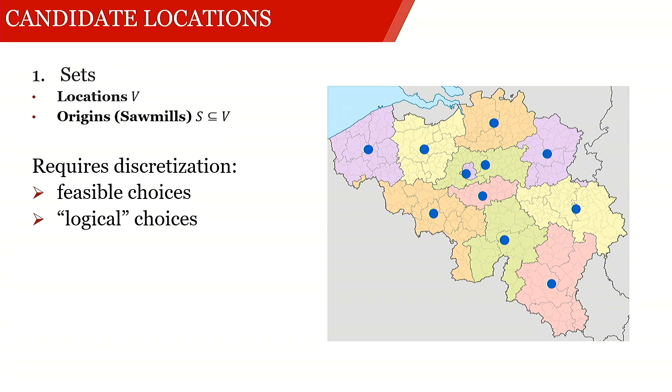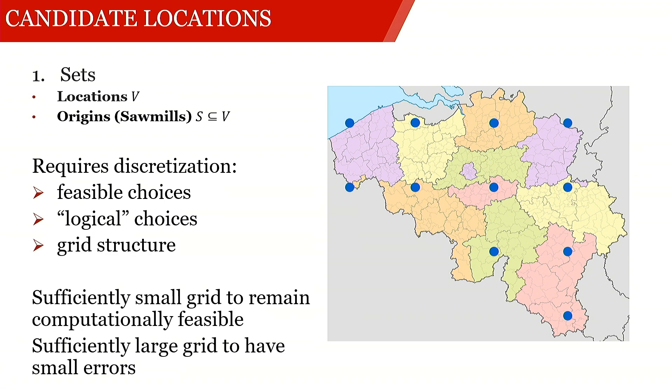The next thing that we could look into is a grid structure. We could always go for an equally spaced grid and we could place these sawmills there. The problem that we're having here is we of course have to be sufficiently small, so we have sufficiently few grid points that we remain computationally feasible. If we increase the set size arbitrarily, eventually we're getting computational problems.